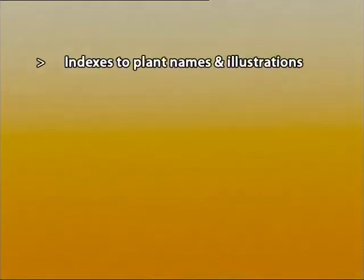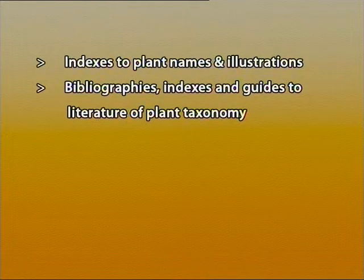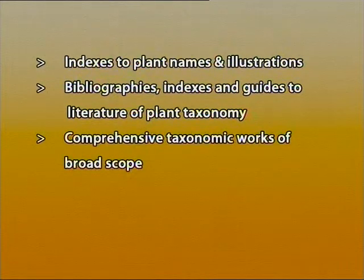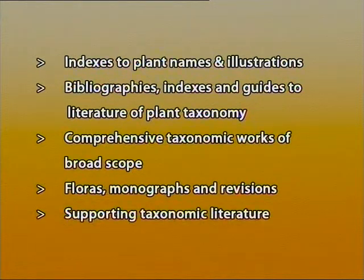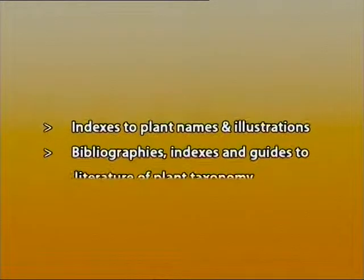Now the second part — the sources of taxonomic literature — will be much more detailed. The various forms of taxonomic literature can be discussed under five main headings: first, indexes to the plant names and illustrations; second, bibliographies, indexes, and guides to the literature of plant taxonomy; third, comprehensive taxonomic works of broader scope; fourth, floras, monographs, and revisions; and fifth, supporting taxonomic literature.